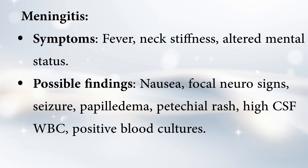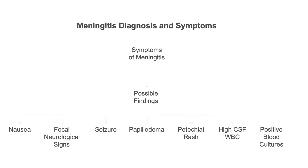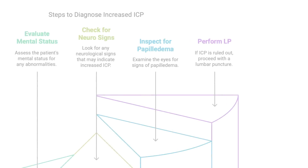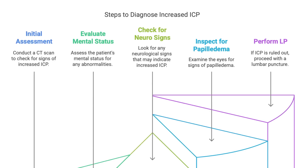Other things that might make you suspect meningitis include possible nausea, focal neurological signs like weakness in one arm or leg, seizures, papilledema — that swelling in the back of the eye — and sometimes a petechial rash: those little red or purple spots that don't go away when you press on them. They might also find a high white blood cell count in the spinal fluid from a lumbar puncture, and maybe positive blood cultures if the infection is in the blood. Diagnosing this involves ruling things out first.